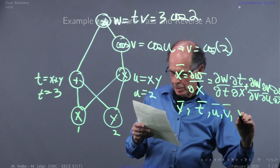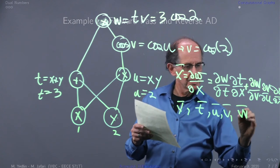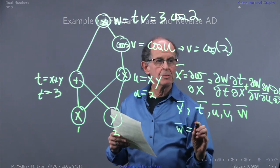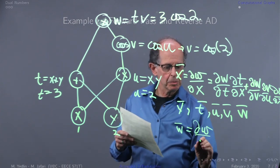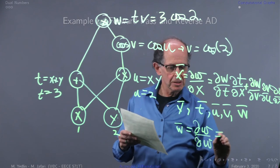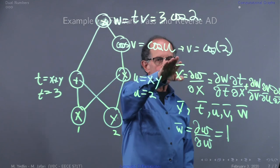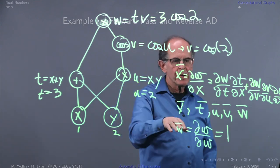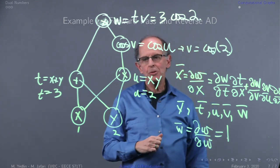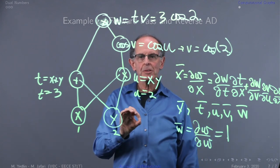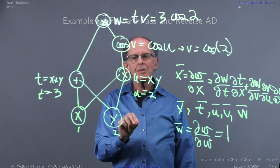And also w dash. w dash is really easy: w dash equals dw/dw, which equals one. When we write down these values with all the substitutions, we can set it up as a triangular matrix equation.